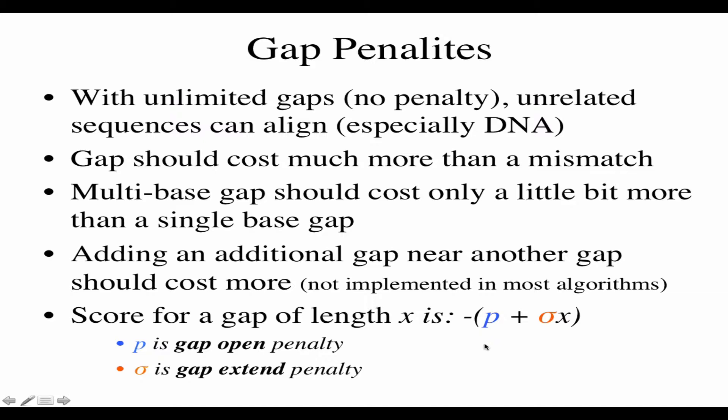The formula for the affine gap penalty: P is the gap open penalty, sigma is the gap extend penalty, and X is the number of additional spaces of gap being inserted. These are typically parameters you're allowed to adjust in your alignment tool. Even BLAST on the NCBI website has a place where you can change the gap penalty. There are generally two different gap penalties you can adjust: the gap open penalty and the gap extend penalty.